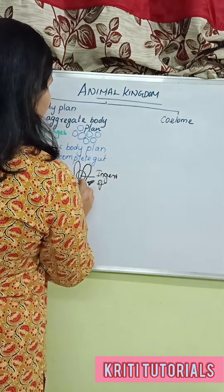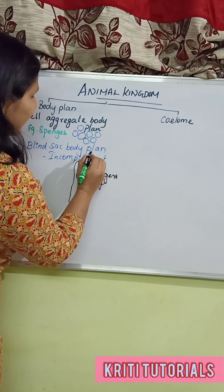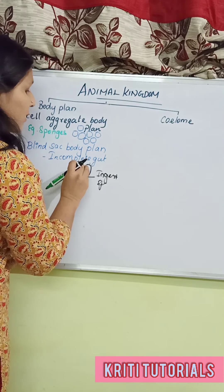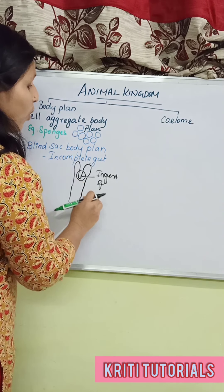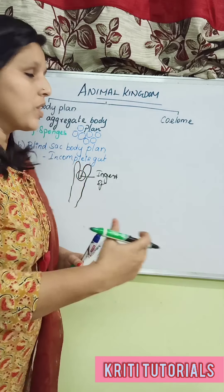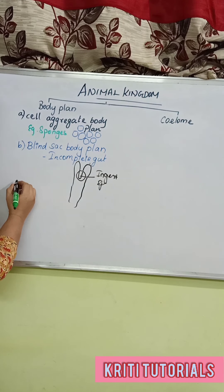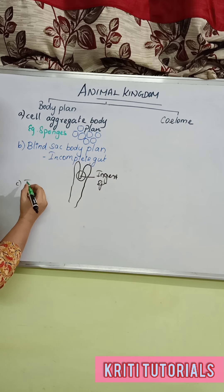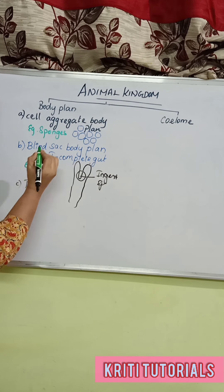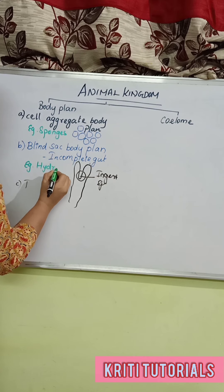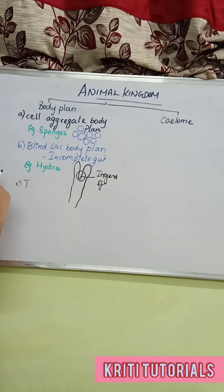In the blind sac body plan, we can see only one cavity which acts as the site for both ingestion as well as ejection of waste materials. The example for this blind sac body plan is hydra.